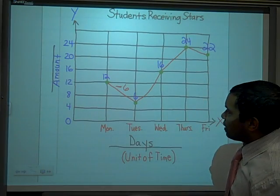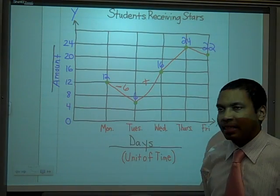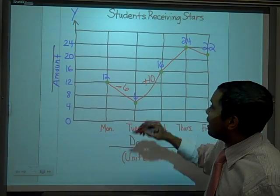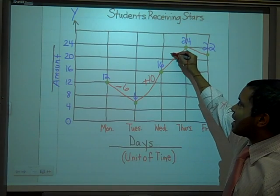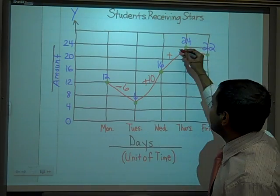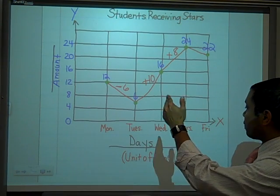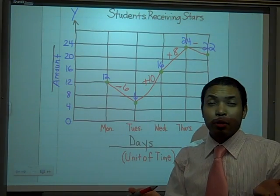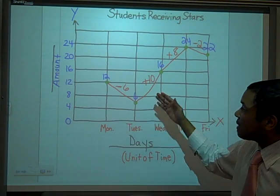Between Tuesday and Wednesday the line goes up from left to right, so that's an increase. The difference between 6 and 16 is 10 — an increase of 10 stars. From Wednesday to Thursday, going from 16 to 24, is also an increase — 24 minus 16 is 8, an increase of 8. Then from Thursday to Friday, 24 to 22, is a decrease — the difference between 24 and 22 is 2, a decrease of 2.